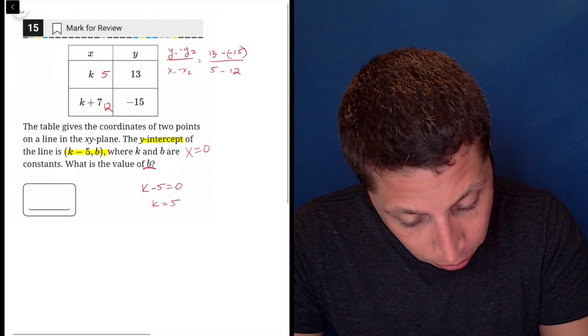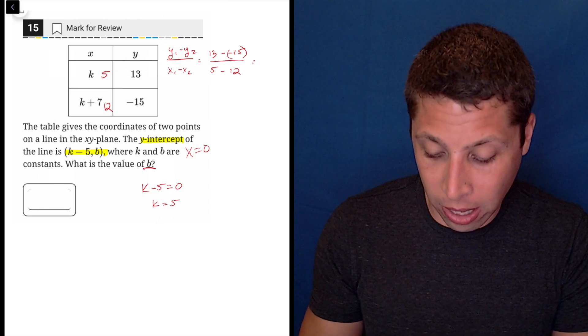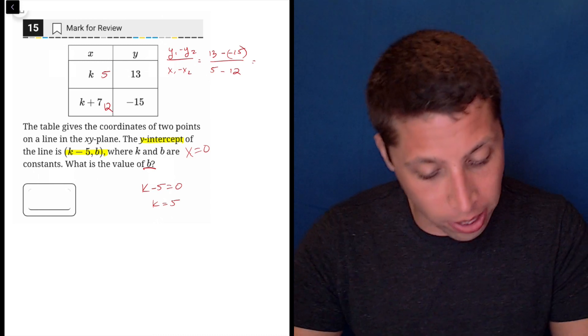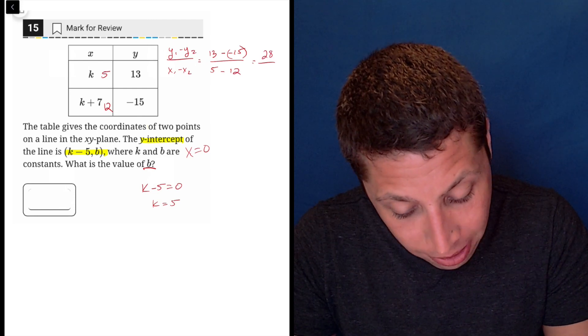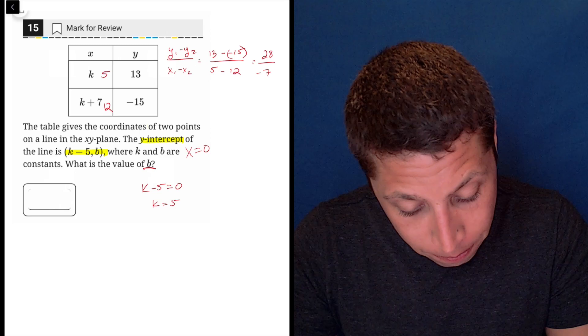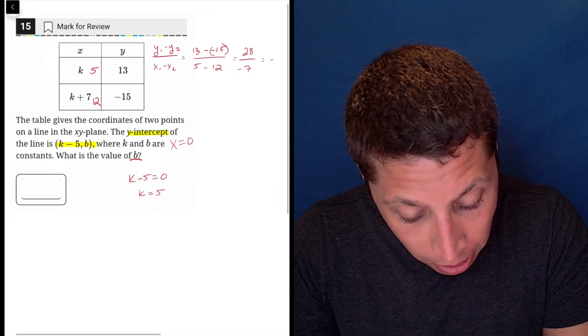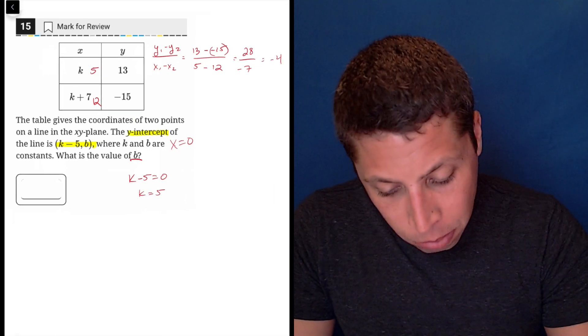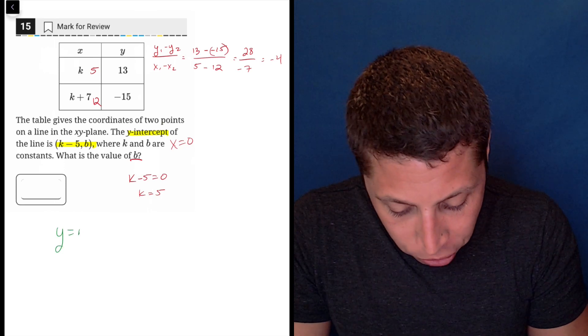So now 13 plus 15, I know I can do that in my head but it's getting late and why not enter in the calculator, is 28. And 5 minus 12 is negative 7. So this is a slope of negative 4. So now I'm starting to build my y equals mx plus b equation.